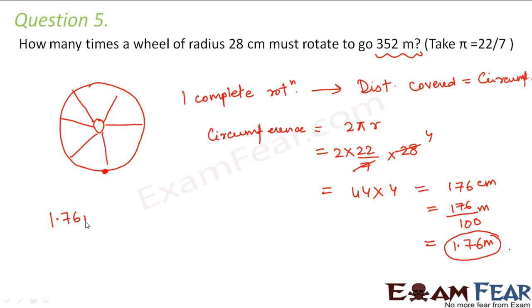To cover 1.76 meters, how many times does the wheel rotate? The wheel rotates one time, because it was just one rotation where it covers a distance equal to the circumference.